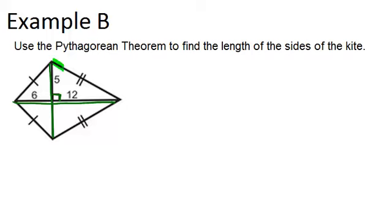Let's first start by finding the length of this segment. So we're going to call this side C because it's the hypotenuse because it's across from the right angle. So the Pythagorean theorem is A squared plus B squared equals C squared,